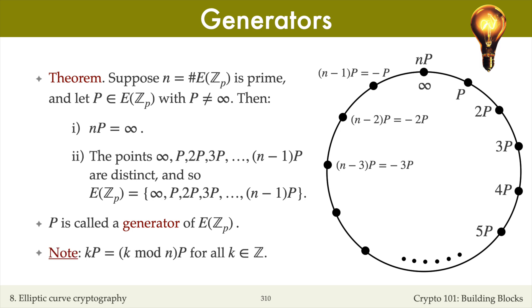Thus, for any integer k, whether positive or negative, we have that kP is equal to the integer k modulo n times P. So the multiplier k of P can be reduced modulo n.